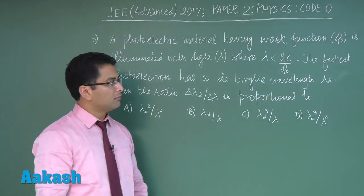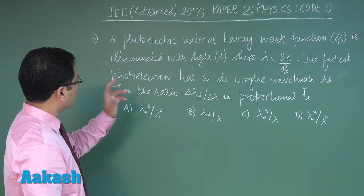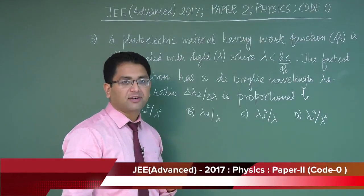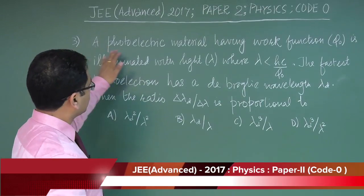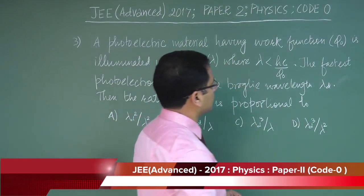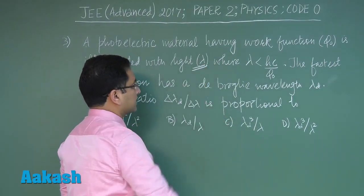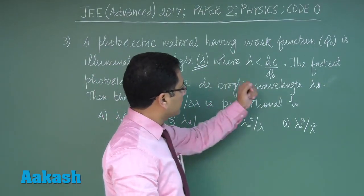Question number three is from modern physics, specifically photoelectric effect. A photoelectric material having work function phi naught is illuminated with light of wavelength lambda. This condition is given.